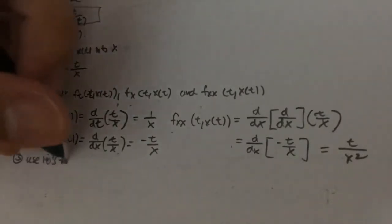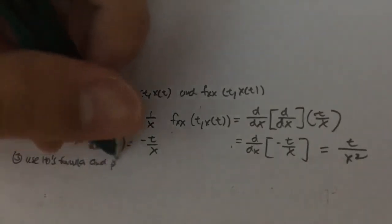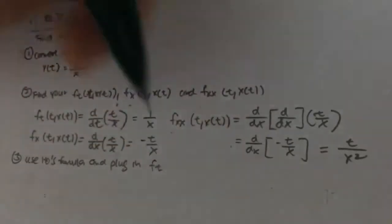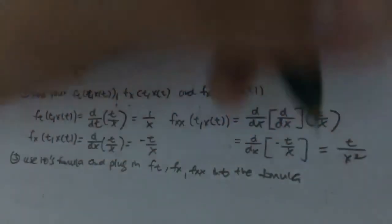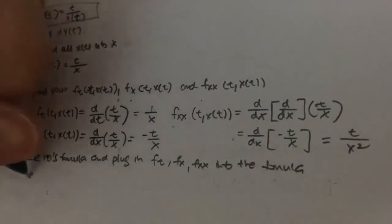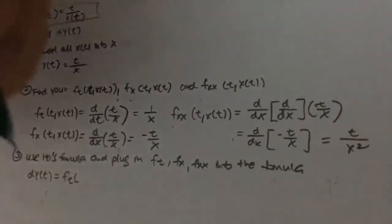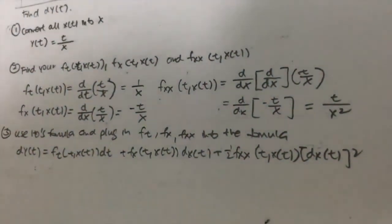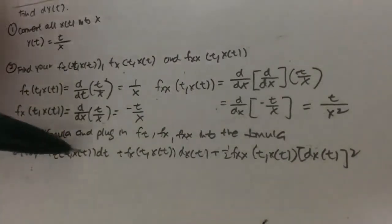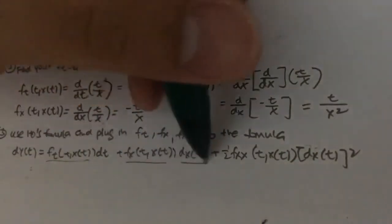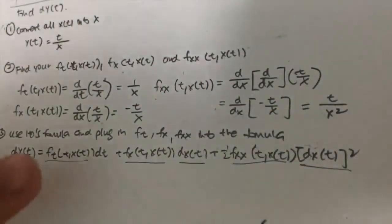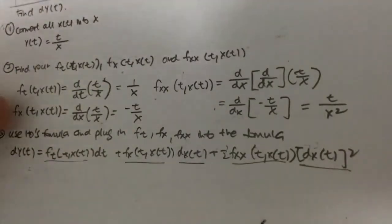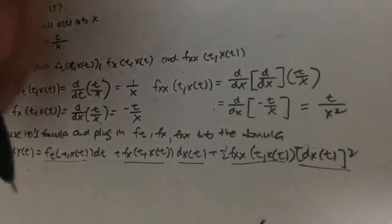The third step is to use Ito's formula and plug in the relevant ft, fx, and fxx into the formula. Recapping, Ito's formula is dy equals this whole expression. The idea is to find all the relevant terms — ft, fx, fxx, dxt, dxt squared — and plug them into Ito's formula. We have already found ft, fx, and fxx, so we just plug those into the formula first.